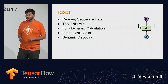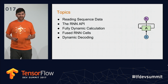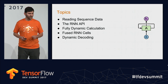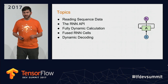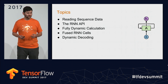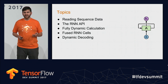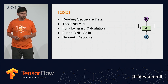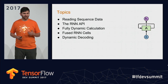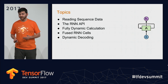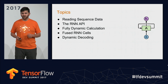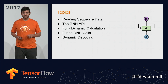Let's talk about what we're going to cover. First, we'll talk about how to read and batch sequence data efficiently in a distributed setting for training. We'll talk about the RNN API itself, and as we do, we'll get into fully dynamic calculation in TensorFlow. Then we'll talk about how to trade off flexibility for efficiency in the RNN. And finally, we'll talk about a neat new library for performing dynamic decoding.